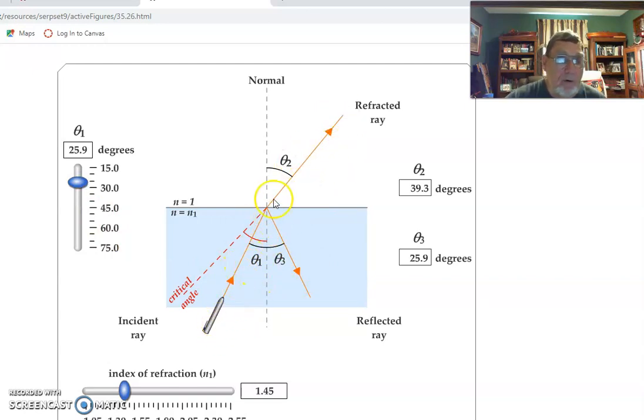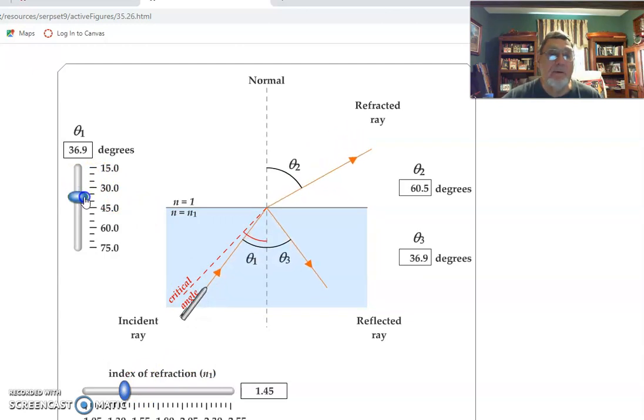then that beam will come out and refract away from the normal because I'm going from slow to fast. And as I increase that angle, that initial angle theta 1, then the refracted angle, of course, is bigger than the incoming and it moves over